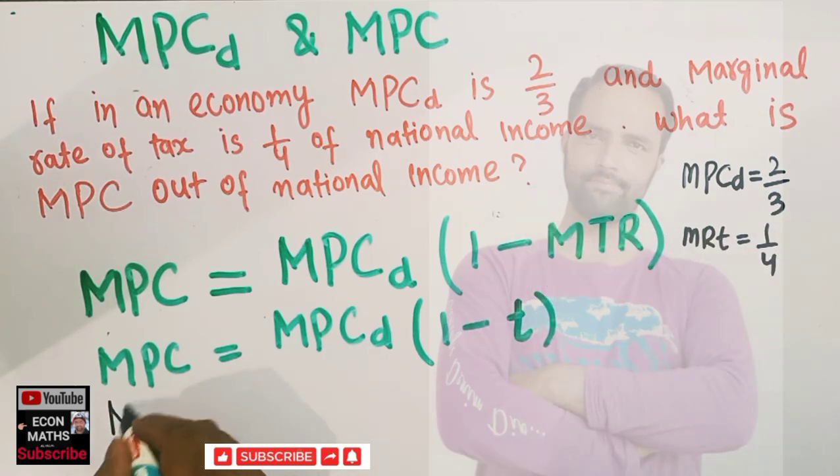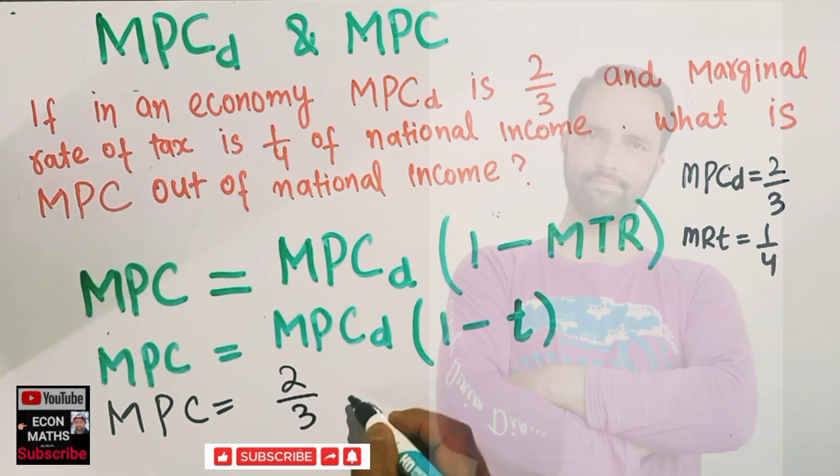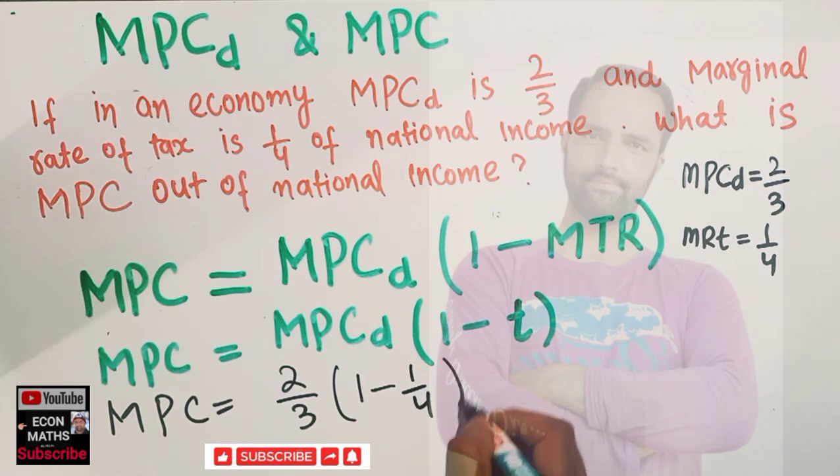minus the marginal rate of tax), which is 1/4. Solving this, we have 2/3 times (1 minus 1/4). (1 minus 1/4) is 3/4, so this comes out to be 3/4.